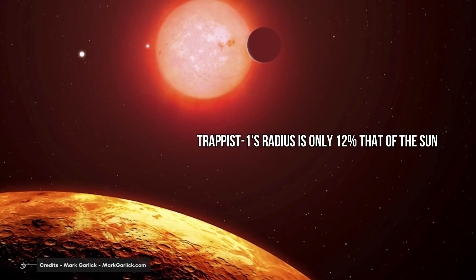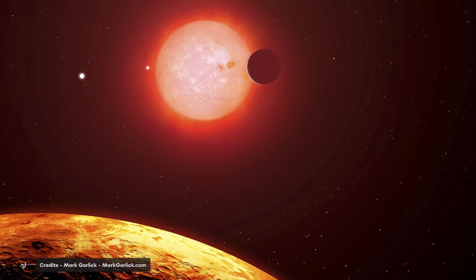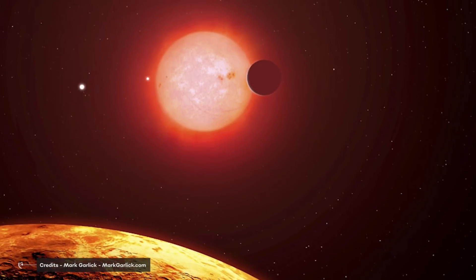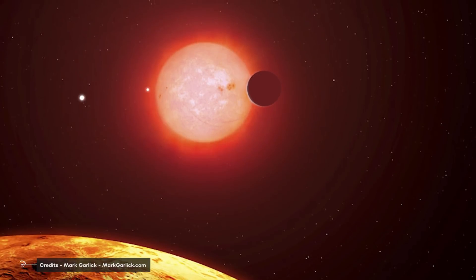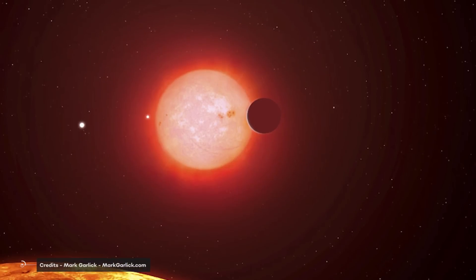TRAPPIST-1's radius is only 12% that of the Sun, so it's just a little bigger than Jupiter. And this was also a plus, because for a given planet radius, the transit signal is easier to detect for a smaller star. But now let's get to the main question.